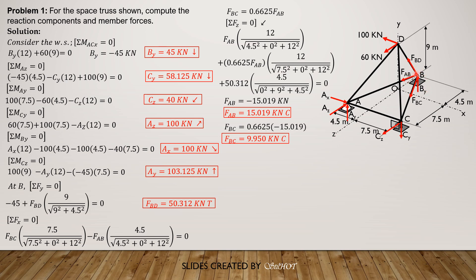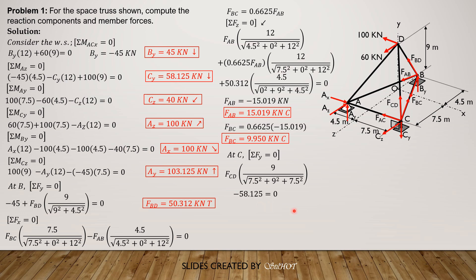All members at joint B are found, so we proceed to joint C. For FCD, sum up forces along Y: FCD times 9 divided by the square root of 7.5 squared plus 9 squared plus 7.5 squared — that is X component 7.5, Y component 9, Z component 7.5 — minus CY which is 58.125, equals 0. Solving, FCD is 89.88 kN tension.